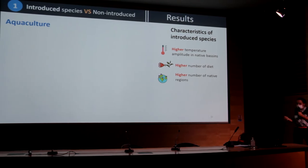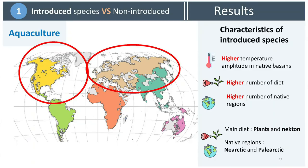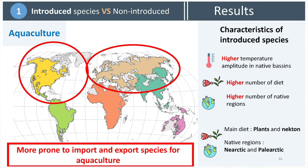Introduced species are also more represented in the Palearctic and Sino-Oriental regions concerning native origin, certainly due to the most important introduction pathways — aquaculture and ornamental — which we will see next. Concerning aquaculture, species introduced through this pathway have a higher temperature amplitude in native basins, a higher number of diets, and a higher number of native regions than species not introduced through aquaculture. Species introduced through aquaculture are also more represented in plant and invertebrate diet categories, and in the Nearctic and Palearctic regions — economically well-developed regions more prone to import and export species for aquaculture.